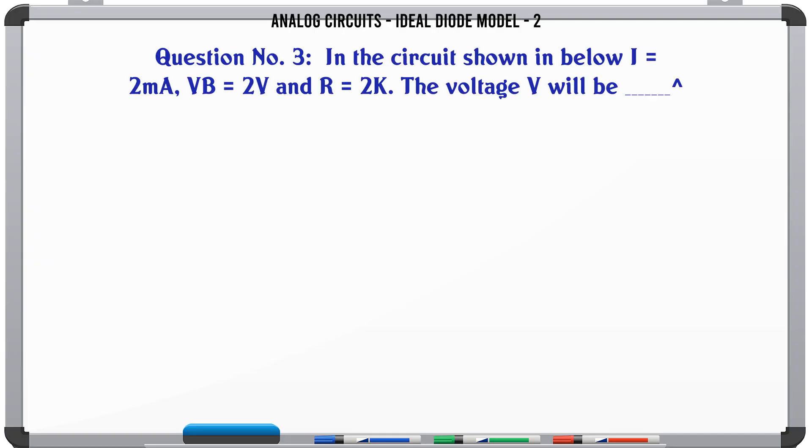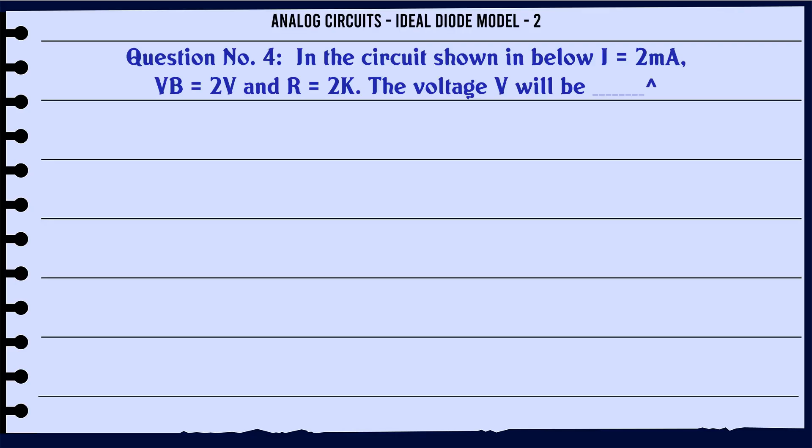In the circuit shown below, I = 2mA, VB = 2V, and R = 2K. The voltage V will be: A) 2V, B) 3V, C) 6V, D) 5V. The correct answer is 2V. In another circuit with I = 2mA, VB = 2V, and R = 2K, the voltage V will be: A) 2V, B) 2V, C) 4V, D) 1V. The correct answer is 2V.